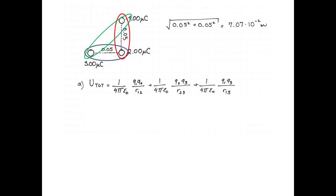That's in red, the 2 and the 3 make up the second pair, and 1 and 3 make up the third pair. So we just add up the potential energies of the pairs.